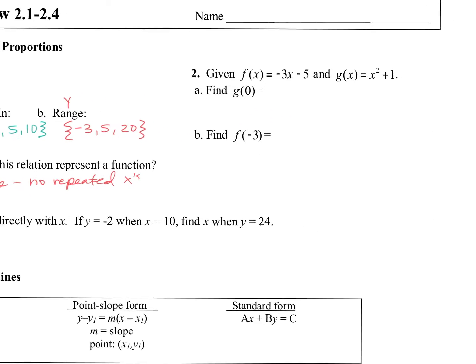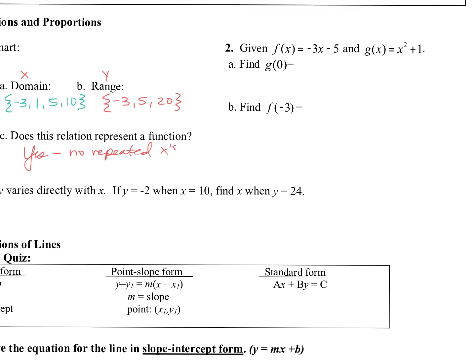Number two. So it says given f of x, which is negative 3x minus 5, and g of x, which is x squared plus 1, find g of 0 and f of negative 3. Two separate problems here. For g of 0, plug 0 in for x in the g function. So g of 0 is 0 squared plus 1. 0 squared is 0, plus 1 would be 1.